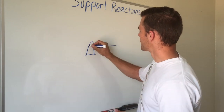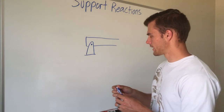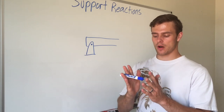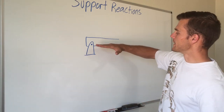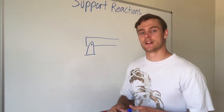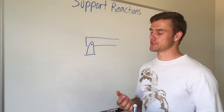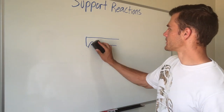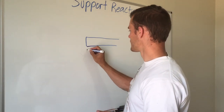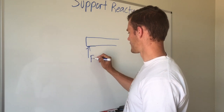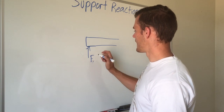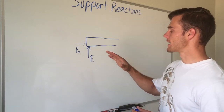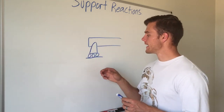A pin support has the beam pinned at a point. In 3D, this looks like two plates with the beam in the middle and a pin going through both the plate and the beam. This lets the beam rotate but doesn't allow it to move in any direction. A pin support allows rotation but resists translational movement, so its reaction forces are in both the x and y directions.